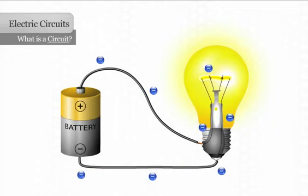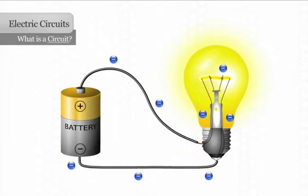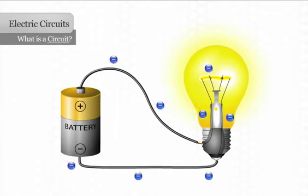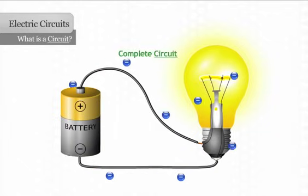There would not be a complete circuit if the electrons did not travel to the positive side of the battery, and the bulb would not light. When there is an unbroken path on which electrons flow, as in this example, it is called a complete circuit.